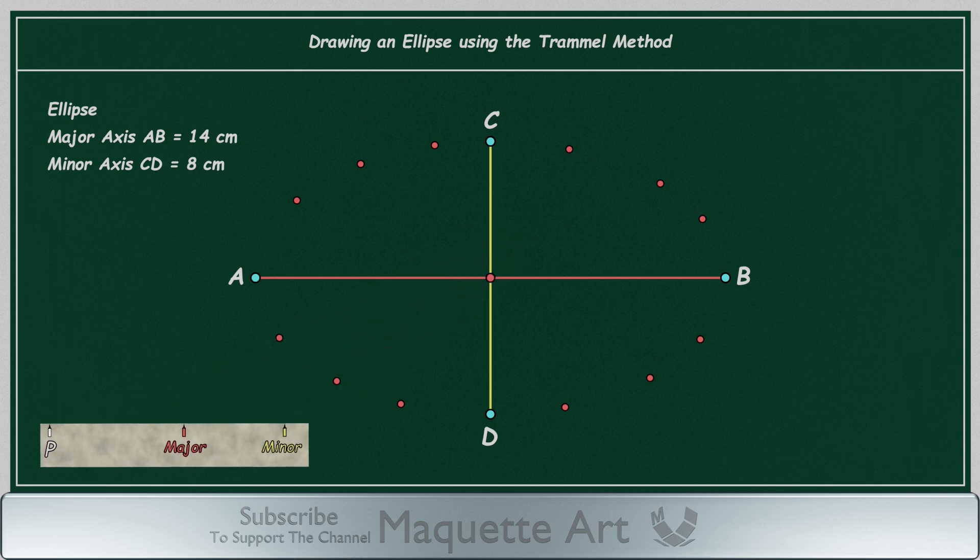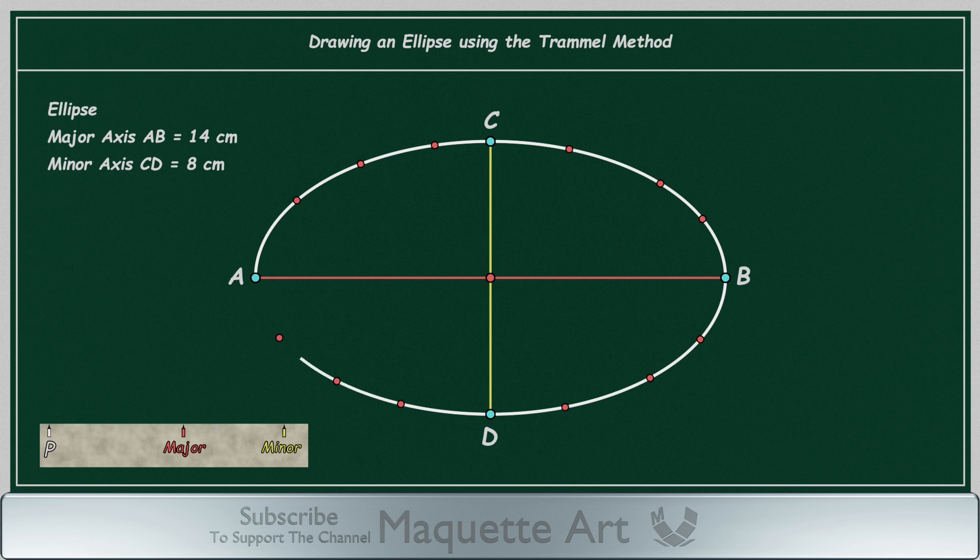After you have enough points, you can start connecting them manually by hand. You can increase the points to get more accurate results if you like. Also, you can use a French curve or a flexible curve to connect the points.